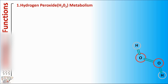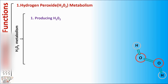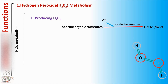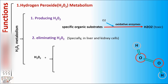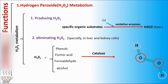Function number one: hydrogen peroxide (H2O2) metabolism. H2O2 metabolism can be divided into two parts. Part one, producing H2O2: a specific organic substrate plus O2, via oxidative enzymes, creates H2O2, which is toxic. Part two, eliminating H2O2, especially in liver and kidney cells: H2O2 plus phenols, formic acid, formaldehyde, or alcohol, via catalase, creates H2O. In addition, when excess H2O2 accumulates in the cell, catalase converts it to water molecules and oxygen.